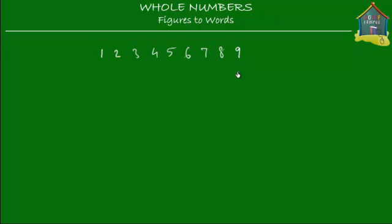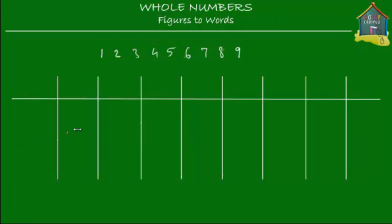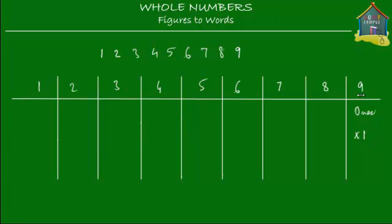What I do first is use a place value table. I'm going to put all these digits into this table and mark the place of each digit. I put the 9 here, because 9 is in the least important place — the 1s place — followed by 8, 7, 6, 5, 4, 3, 2, and 1. Since 9 is in the 1s place, its value is 9 times 1, which is just 9.